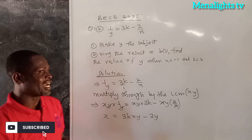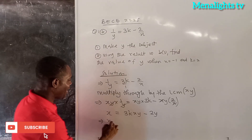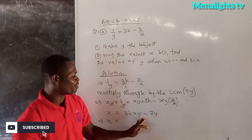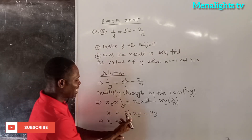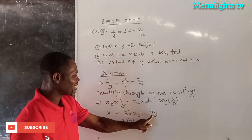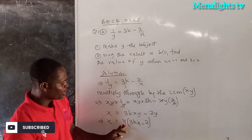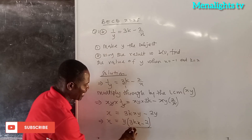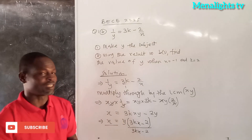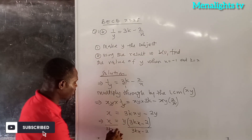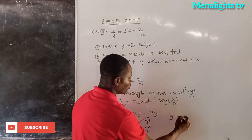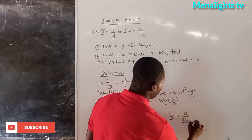We have to make Y the subject, not X. So we factor out Y on the right: X = Y(3KX − 2). Then we divide both sides by (3KX − 2). The (3KX − 2) cancels on the right, so Y = X over (3KX − 2).